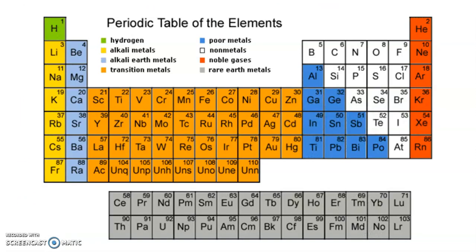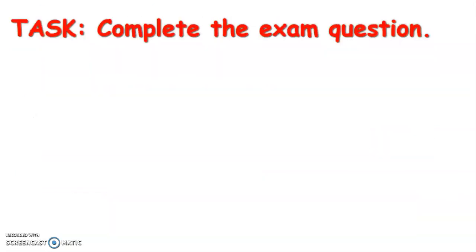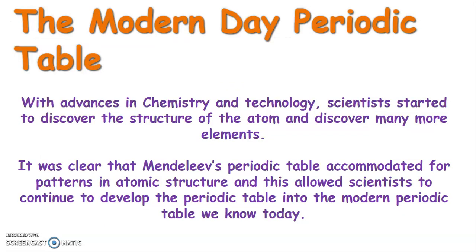That's how we arrived at the modern periodic table we have today. The key points: Mendeleev arranged elements in order of atomic mass; he left gaps for undiscovered elements and predicted their properties — later proven correct; and he swapped elements where properties didn't fit the pattern, which was also vindicated when we ordered them by atomic number. Hopefully that provides good background to the facts in lesson one of the fact book. We'll move on to the next facts in the next video.